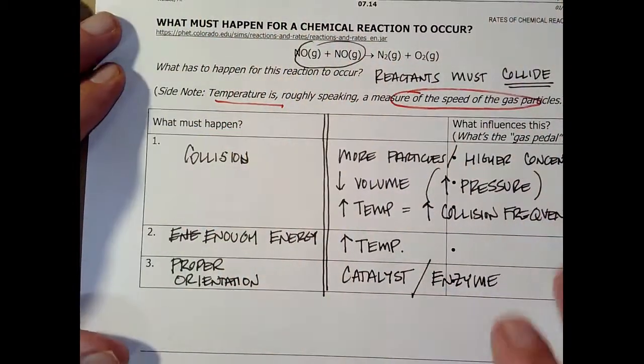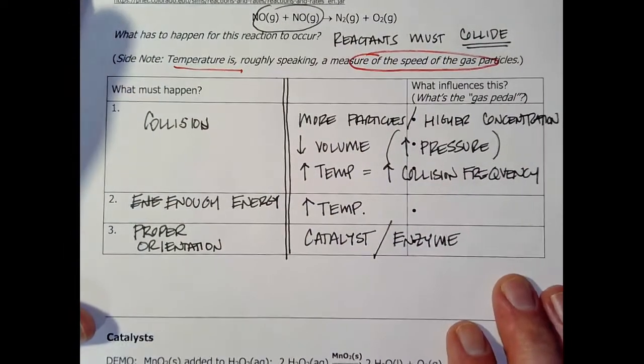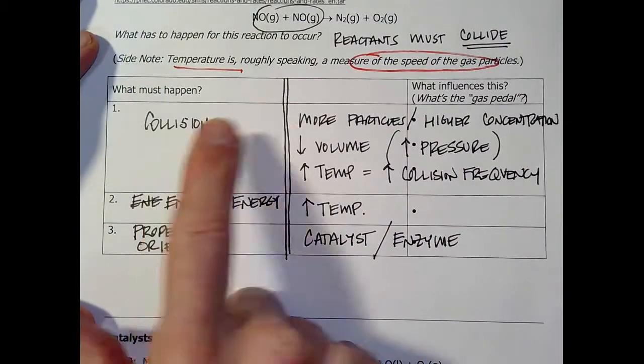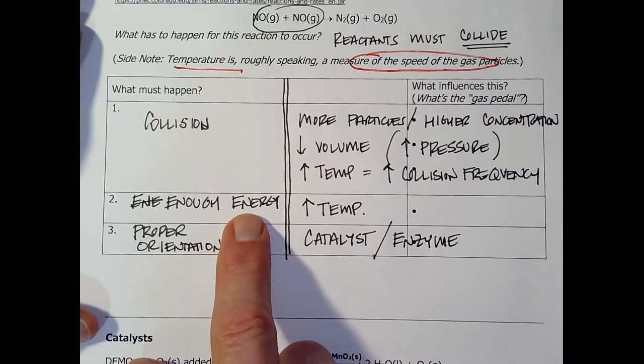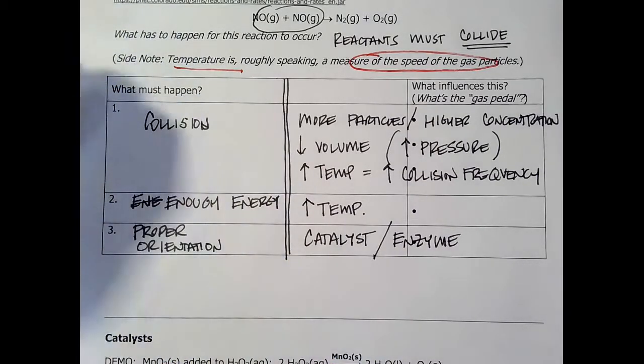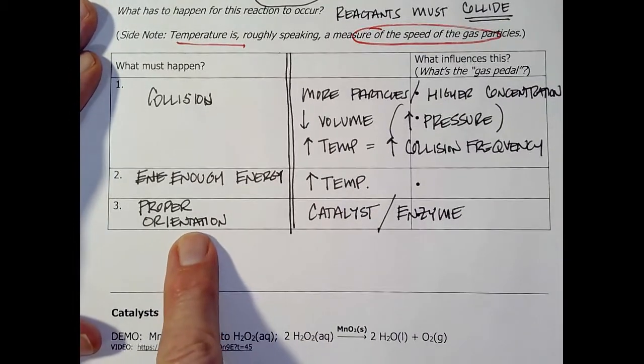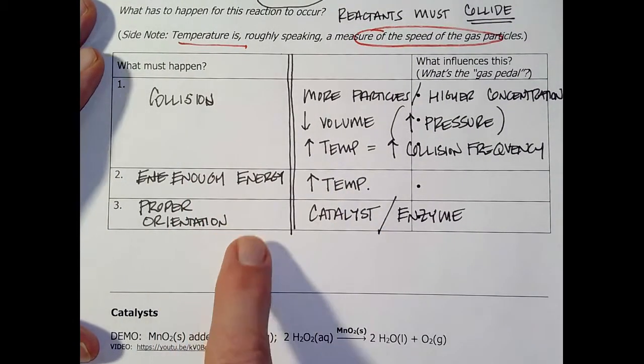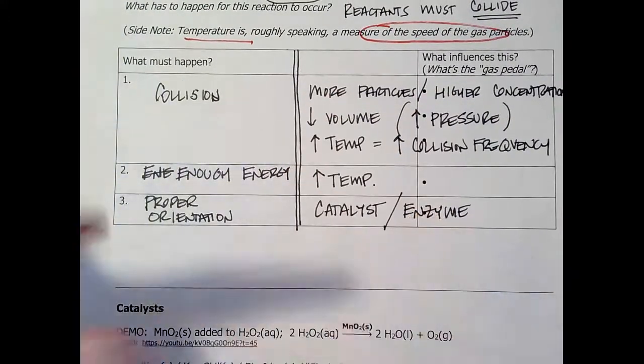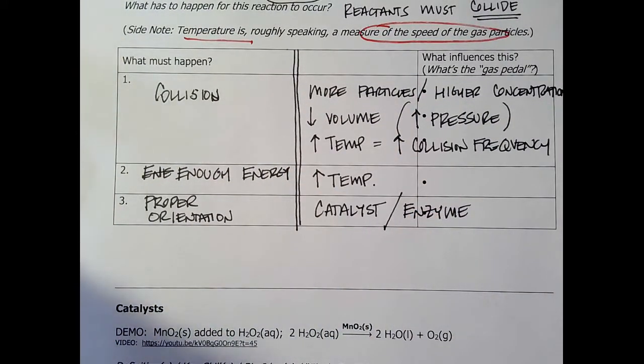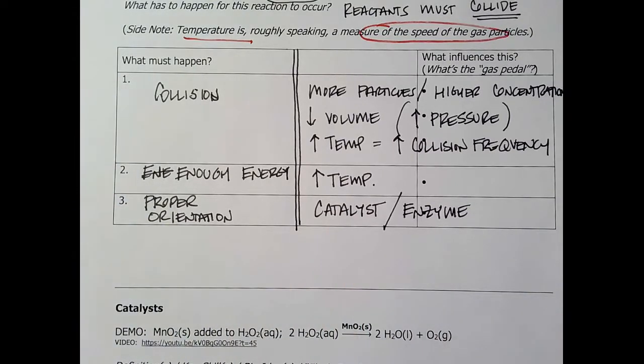So this is our collision theory of reactions. They've got to hit. They have to hit with enough energy to overcome the electron-electron repulsion and break bonds. And they have to hit with the right orientation. If you don't get all three of those things happening, you don't get a chemical reaction. And here's the way we can speed it up. Put in more particles, increase the temperature, or add a catalyst or an enzyme.